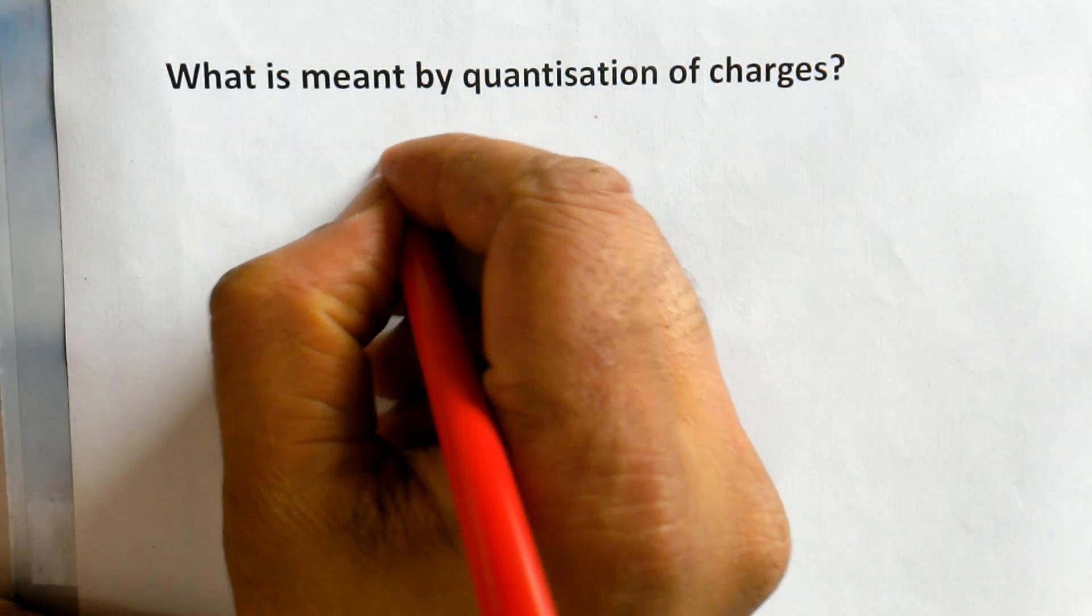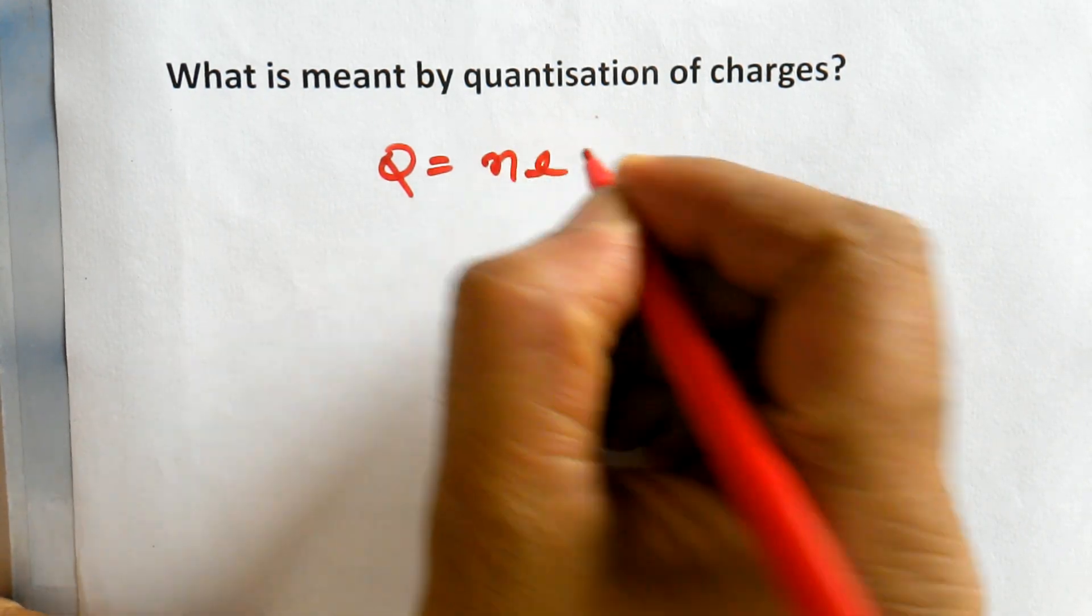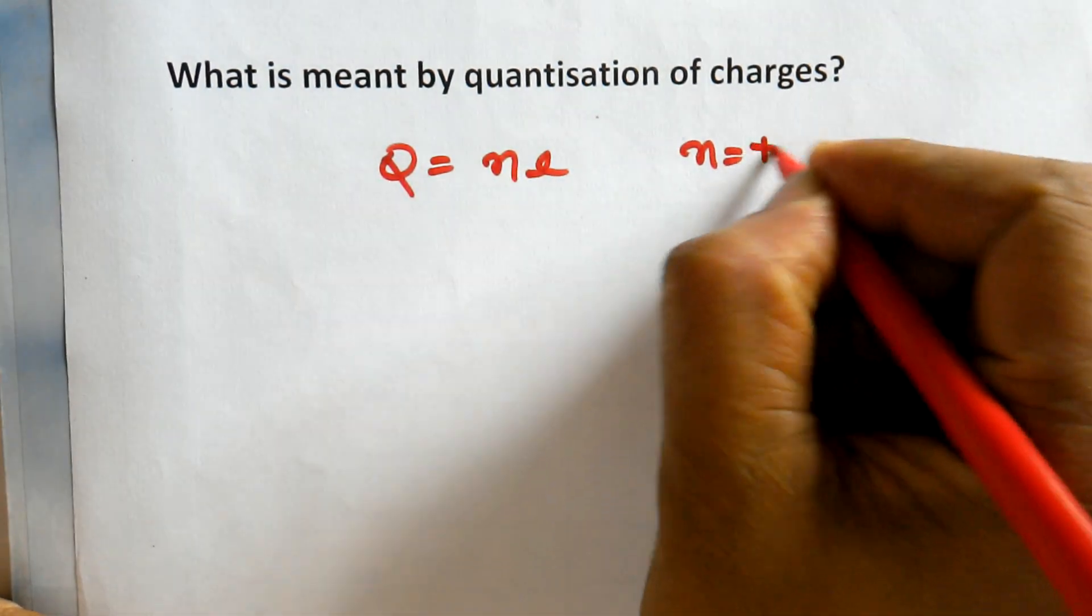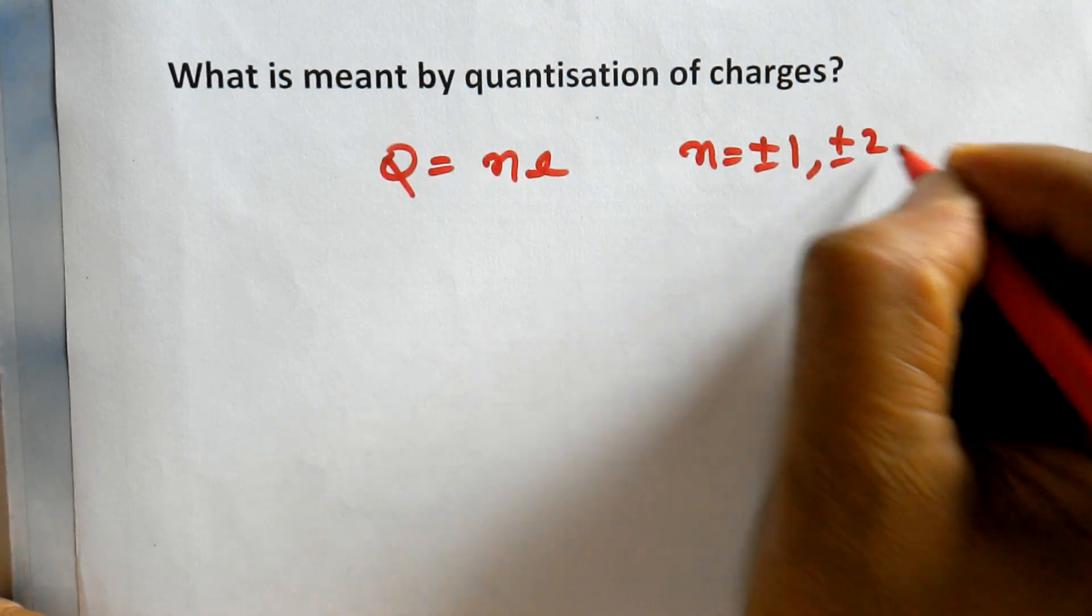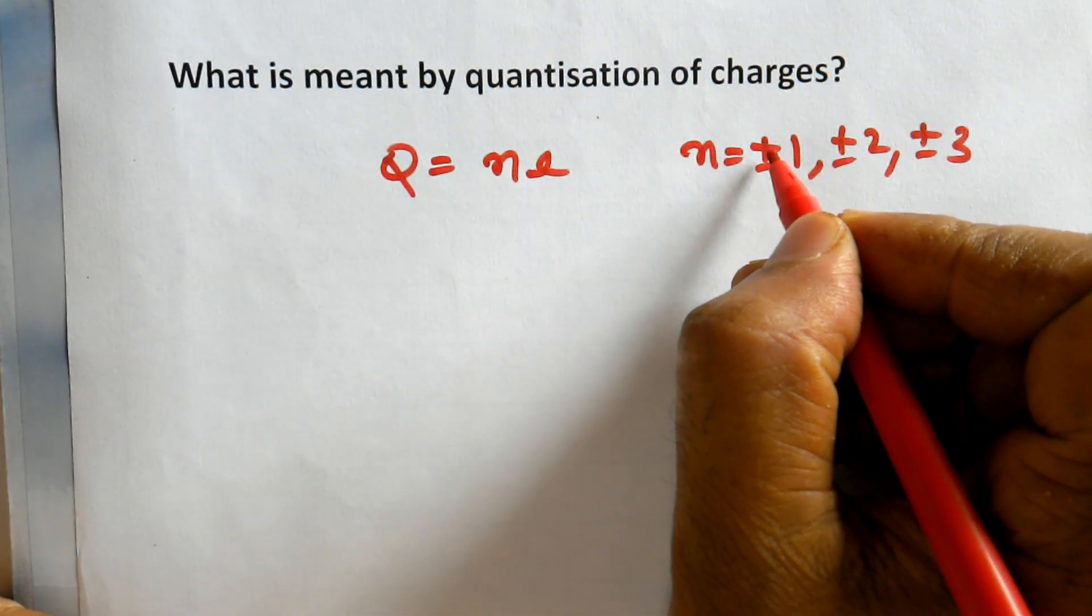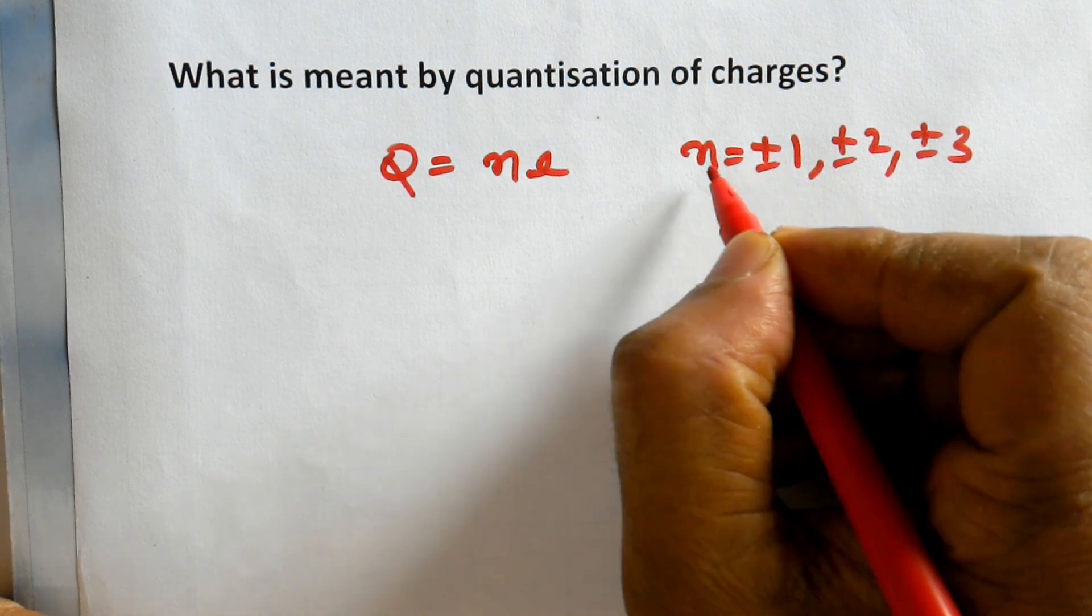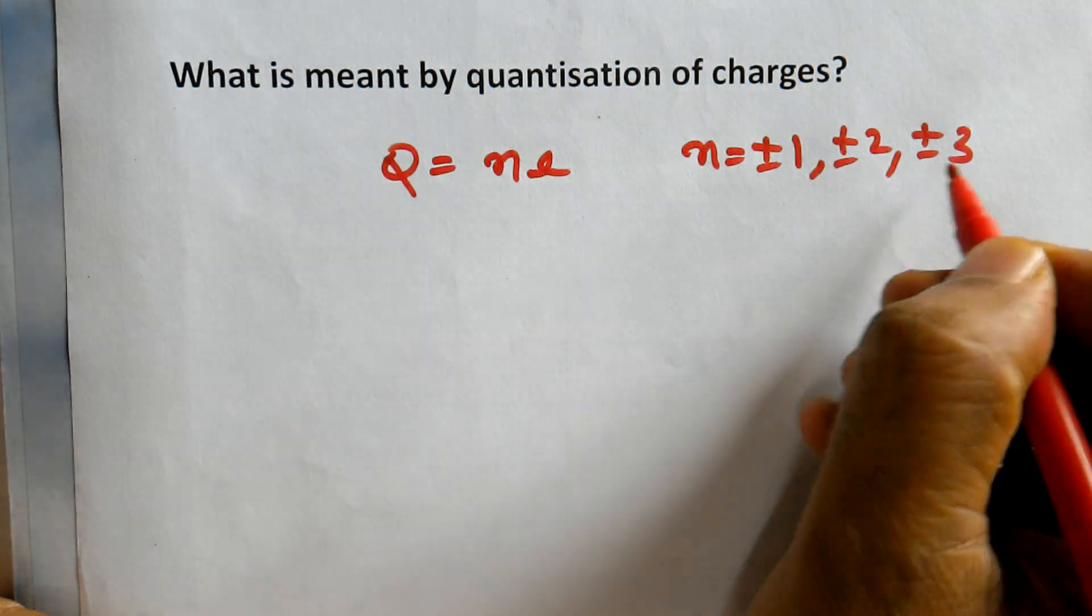The charge on any body Q is equal to ne, where n stands for integers: ±1, ±2, ±3, etc. Plus values occur when electrons are removed from your body, giving positive charge. When electrons are added, you substitute n = -1, -2, -3, and so on.